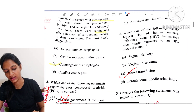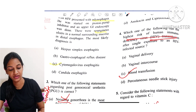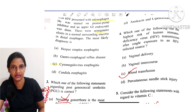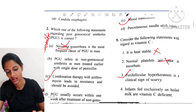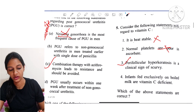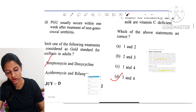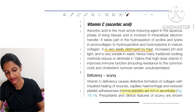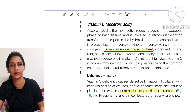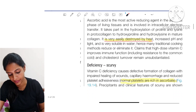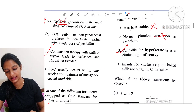Question number 4: Which of the following has the highest risk of HIV transmission after a single exposure? Everyone knows it is blood transfusion. Question 5: Consider the following statements regarding Vitamin C. Ascorbic acid is very easily destroyed by heat — it is not heat stable. Second, normal platelets are rich in ascorbic acid.